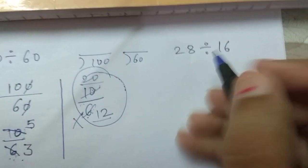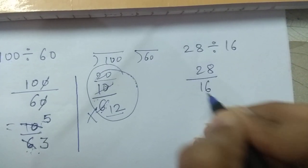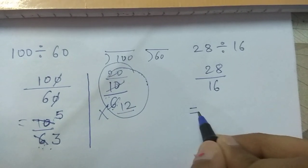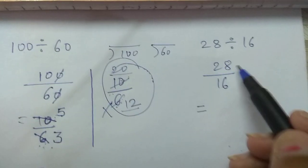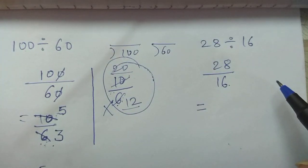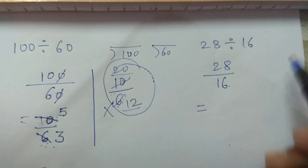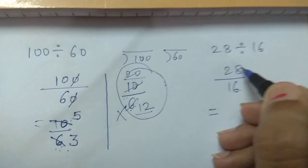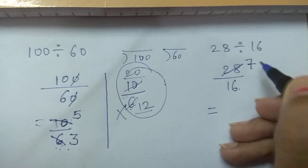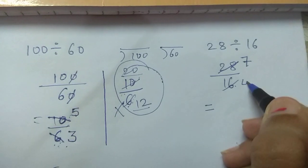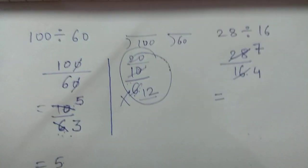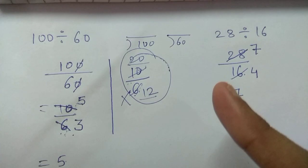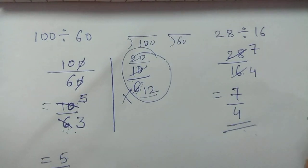Next example, 28 upon 16. So 28 numerator, 16 denominator. Now whenever you are solving ahead, put an equal to sign. Now 28 and 16 comes in with same table. For my recall, it comes in 4's table. So 4 how many times? So we will recite 4's table. Yes, 4, 7 times. 4, 7's are 28 and 4, 4's are 16. So your answer is 7 upon 4. Now 7 and 4 comes in 1's table. So this is our final answer.